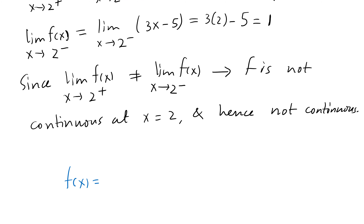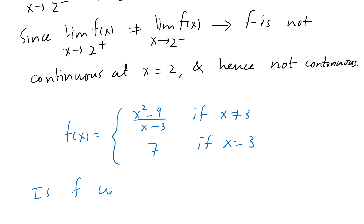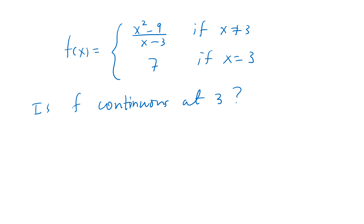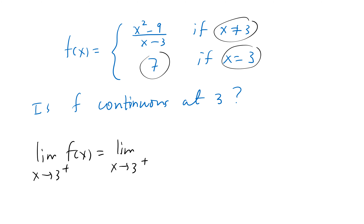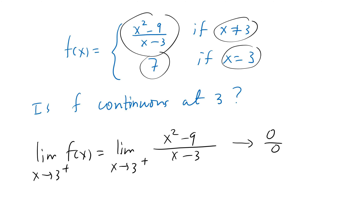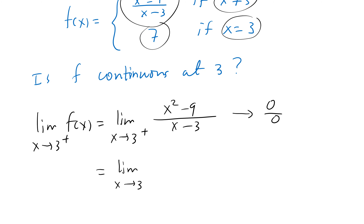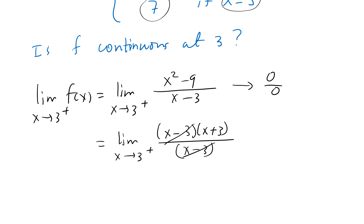Another example: consider the piecewise function f(x) = (x² − 9)/(x − 3) if x ≠ 3, and f(x) = 7 if x = 3. Is f continuous? At x = 3, we find the limit as x approaches 3 from the right. Since x ≠ 3, we use (x² − 9)/(x − 3), which goes to 0/0. We factor: (x − 3)(x + 3)/(x − 3), cancel the (x − 3) factors, and passing the limit gives x + 3 → 3 + 3 = 6.